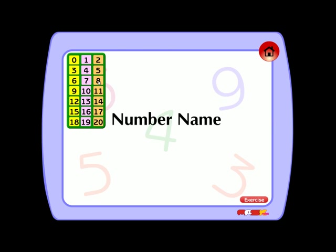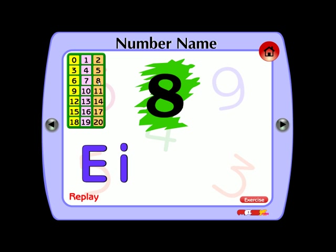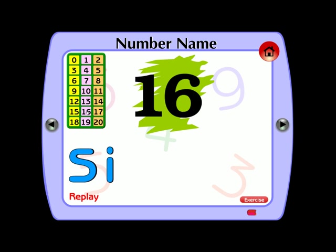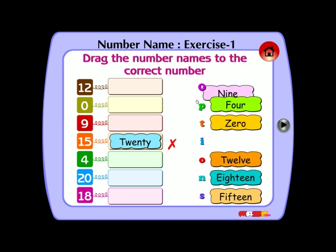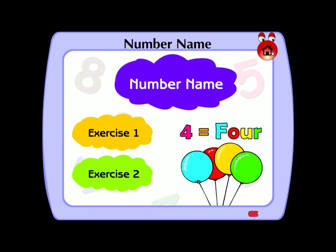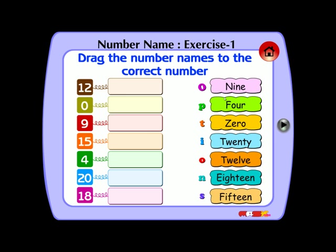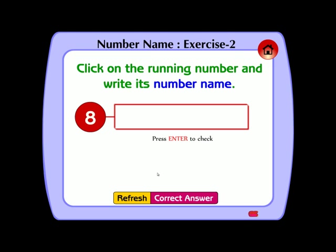Number name. E-I-G-H-T, 8. S-I-X, T-W. Drag the number. Wrong. Right. Drag the number name. Click on. Right.